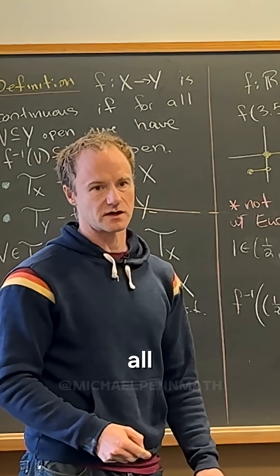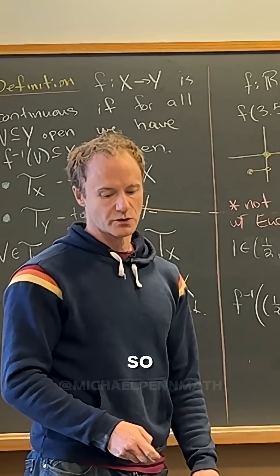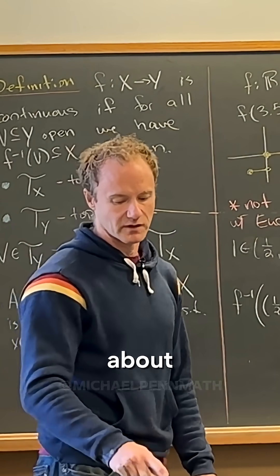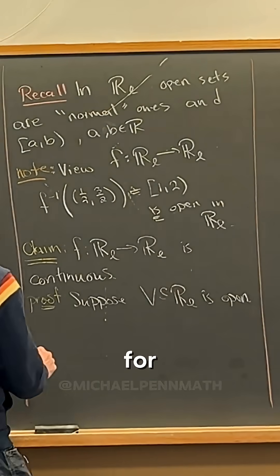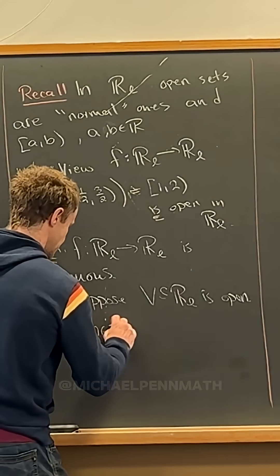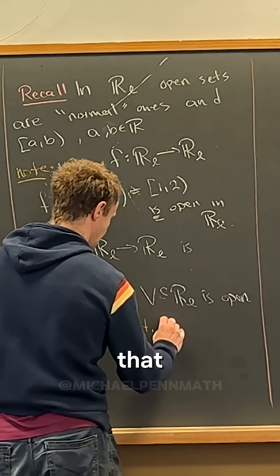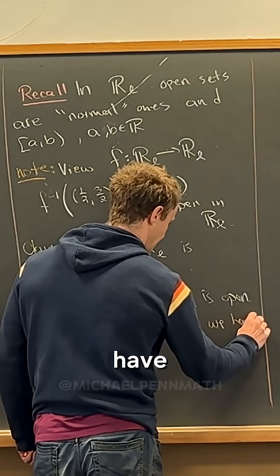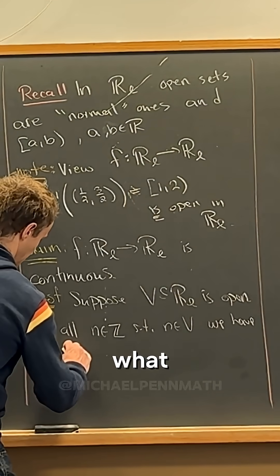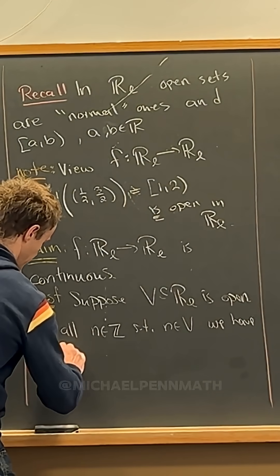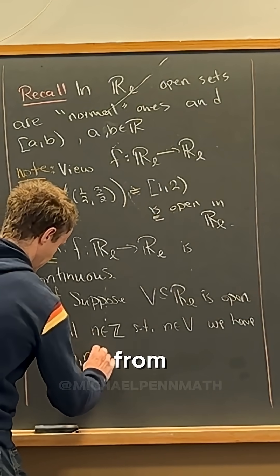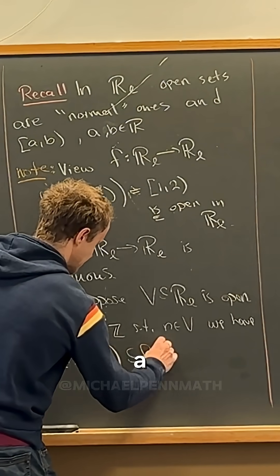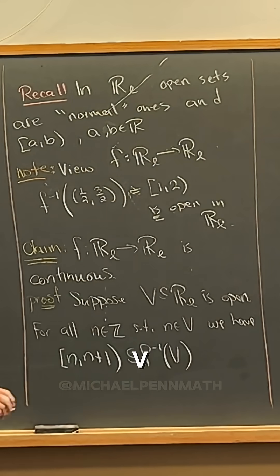Notice that the image of F is all integers — only integers. So we only really need to look at integers when we're thinking about the pre-image. For all integers N such that N is in V, the interval from N to N plus 1 has to be a subset of the pre-image of V.